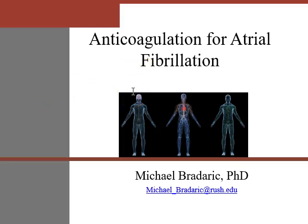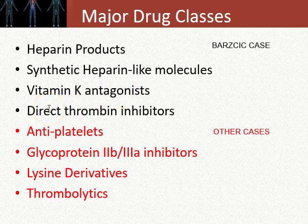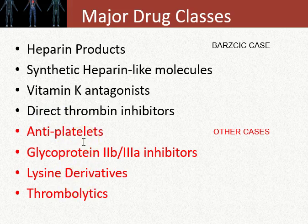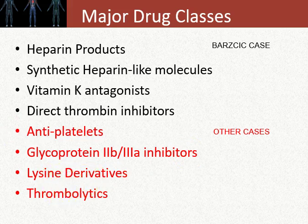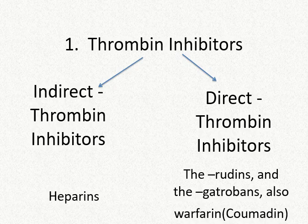We'll talk about vitamin K antagonists and the class of drugs called direct thrombin inhibitors. We're going to leave the other drug classes — which all fall into the anticoagulation and antiplatelet pathway — for other cases. We've already discussed aspirin as an antiplatelet drug and touched on the glycoprotein 2b3a inhibitors in the MI case. The last two drug classes shown here we'll cover another day.